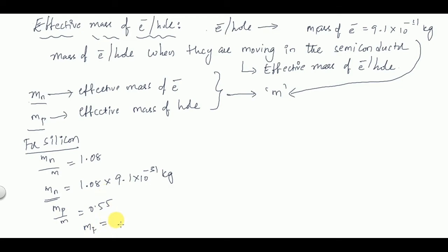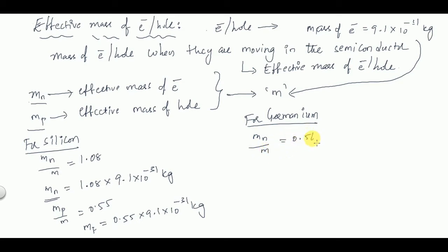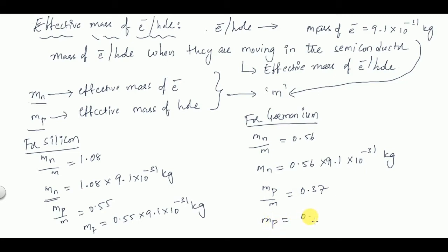For silicon, the effective mass of hole mp = 0.5 × 9.1 × 10⁻³¹ kg. For germanium, mn/m = 0.56, so the effective mass of electron is 0.56 × 9.1 × 10⁻³¹ kg. Similarly, mp/m = 0.57, so mp = 0.57 × 9.1 × 10⁻³¹ kg. These are the values of effective mass for electron and hole in germanium respectively.